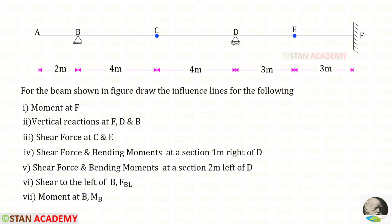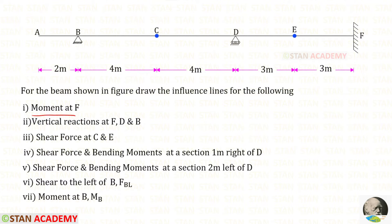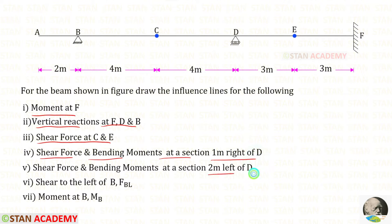Hello everyone. Today we are going to do a problem based on influence line diagrams. Let us read the question one time. For the beam shown in the figure, draw the influence lines for the following: moment at F, vertical reactions at F, D and B, shear force at C and E, shear force and bending moments at a section one meter right of D and two meters left of D, shear force to the left of B and moment at B.